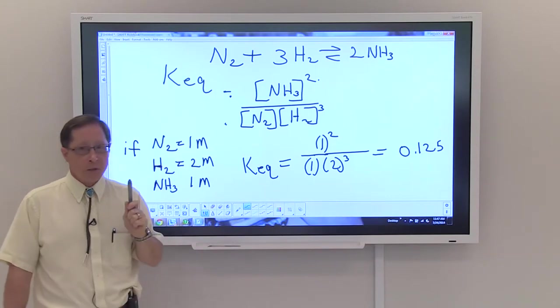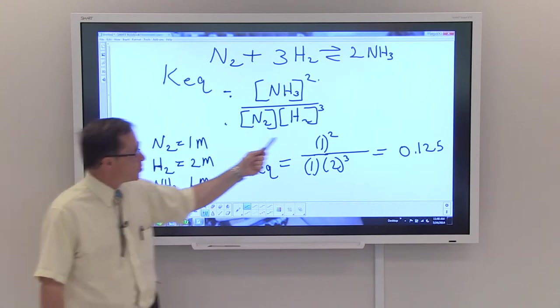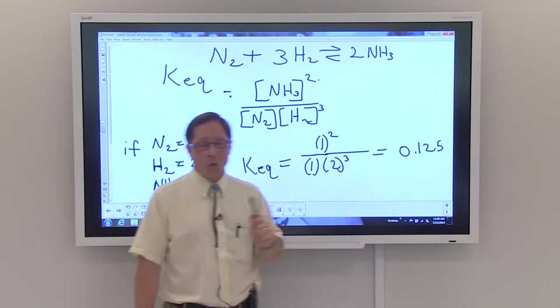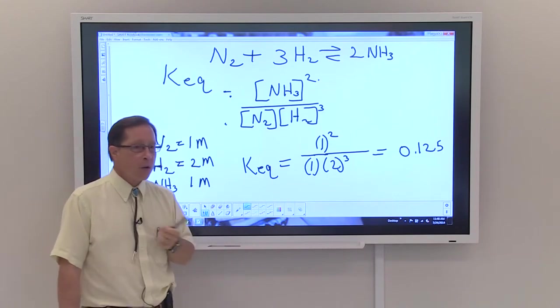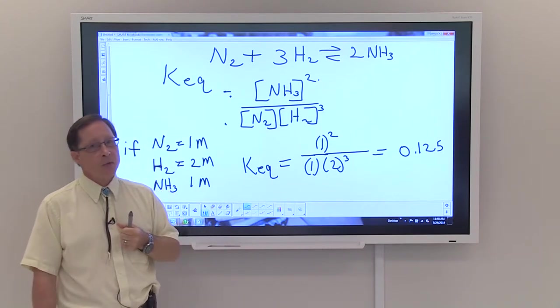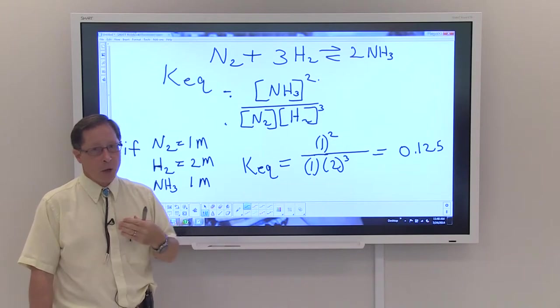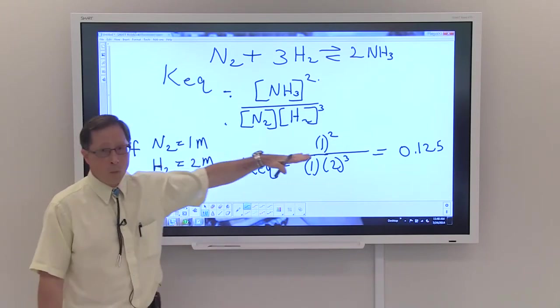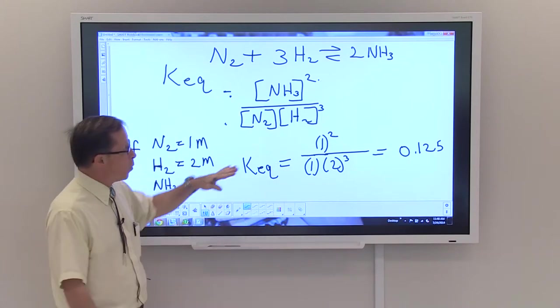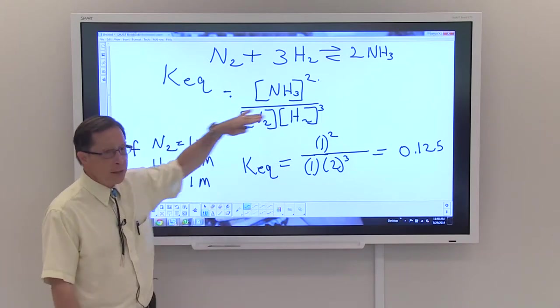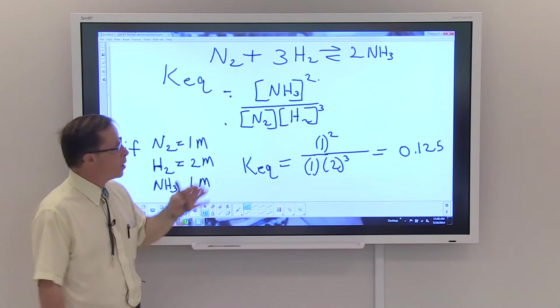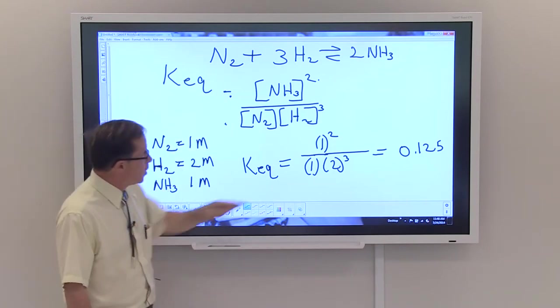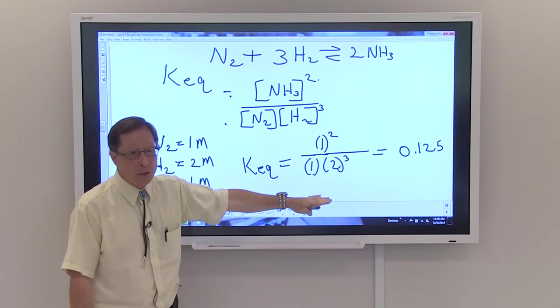Of course, the answer is that reactants are favored because this is a small number. When we talk about small and large numbers, large numbers are 100,000 and bigger. Small numbers are anything that's one or less. At one or less, essentially, you're not making much progress toward a product. So you want those numbers to be as large as they can be.